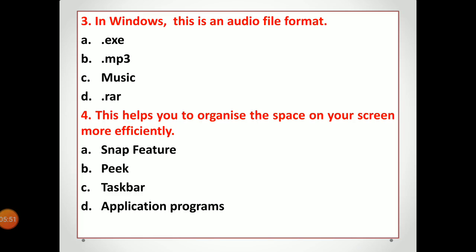Fourth question: how does a feature help us use screen space efficiently? For example, at one time MS Word is open on one side, MS PowerPoint on another side, and Excel is open at the bottom — meaning multiple applications are being used at the same time. The feature that helps us do this is the Snap Feature. So the answer to the fourth question is A — Snap Feature.